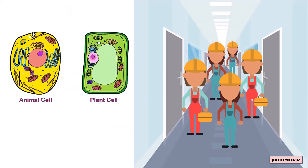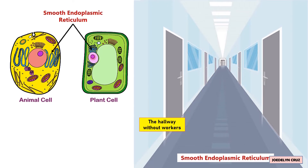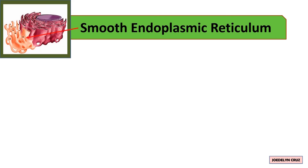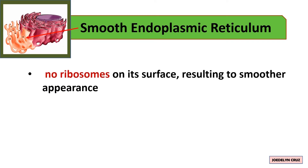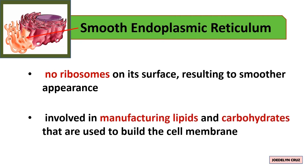On the other hand, the hallway without workers represents the smooth endoplasmic reticulum. Smooth ER has no attached ribosomes on its surface, resulting in a smoother appearance. It is involved in manufacturing lipids and carbohydrates that are used to build the cell membrane.